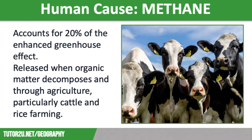Our second greenhouse gas is methane. Methane is very effective at absorbing heat and as a result accounts for 20% of the enhanced greenhouse effect and its subsequent heating of the earth. Methane is released into the atmosphere in many different ways. It is released when organic matter rots down in landfill sites or on compost heaps. It is given off when we burn biomass for energy, and one of the biggest causes is through agriculture.